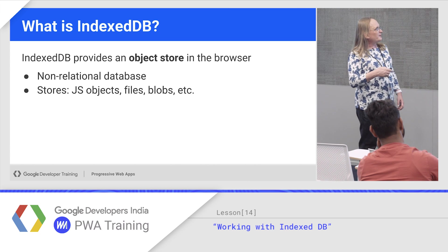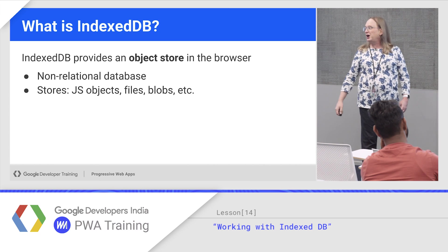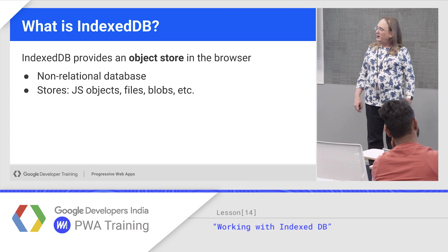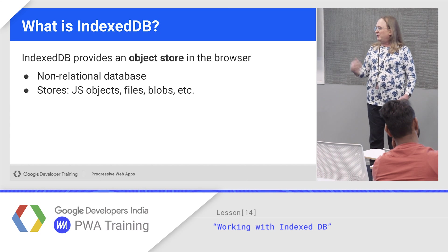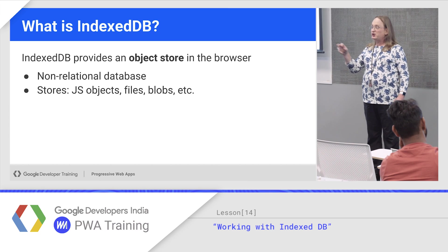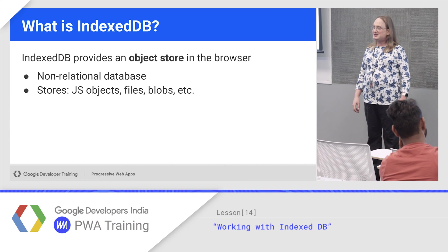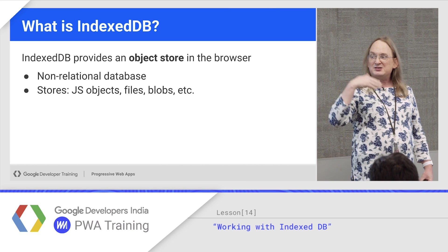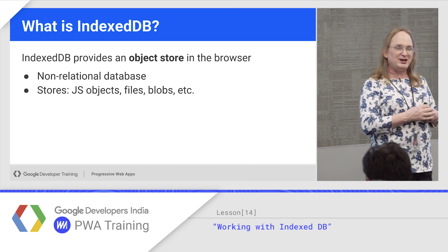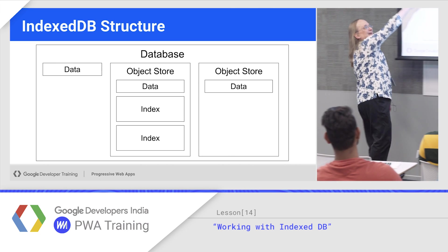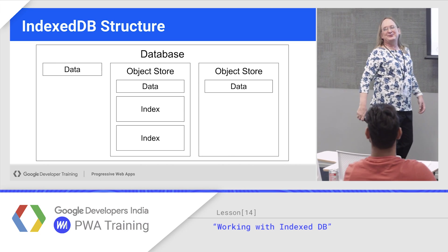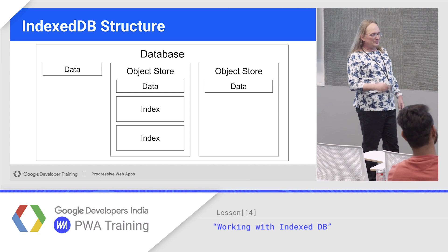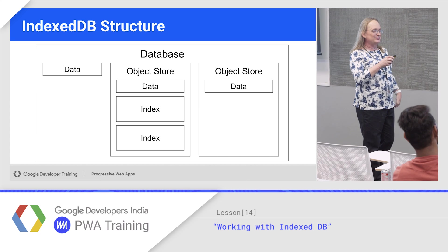You can stick any JavaScript object, files, blobs, whatever you need in there. One idea we talked about yesterday: if you're doing video, you could actually download the individual chunks of video and stick them in the database, then use a media source extension to read the database and stream that into your destination. You can write data by itself to the database without using the object store, but normally you should contain them in object stores.